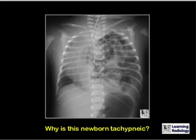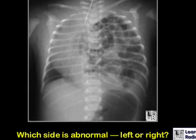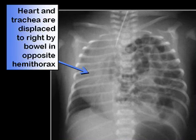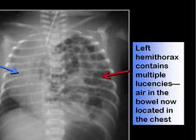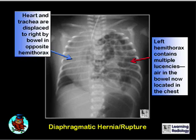This is Diagnosis 11. Why is this newborn tachypneic? The first things to ask are: is it abnormal, and which side is abnormal? Even though the heart and trachea are displaced to the right, the abnormality is on the left side, where multiple lucencies represent air in loops of primarily small bowel now located in the chest. This is characteristic of a diaphragmatic hernia, although it could represent congenital absence or rupture of the diaphragm.